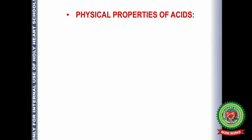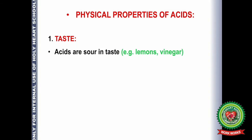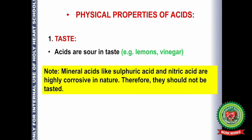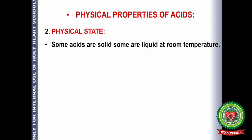Let's start with the physical properties of acids. The first one is taste — acids are sour in taste. For example, when we taste lemon, we know that it is sour in taste. Vinegar, oranges, and grapes are all sour in taste. We should note that mineral acids like sulfuric acid and nitric acid are highly corrosive in nature, so we need not taste those.